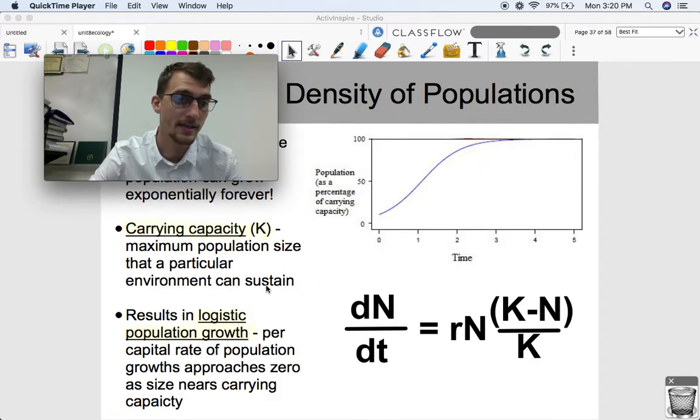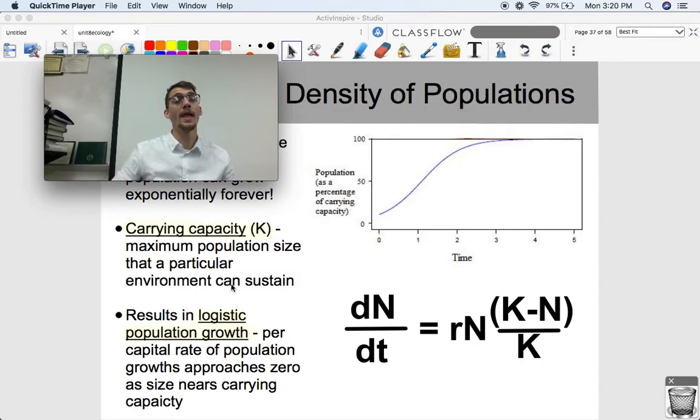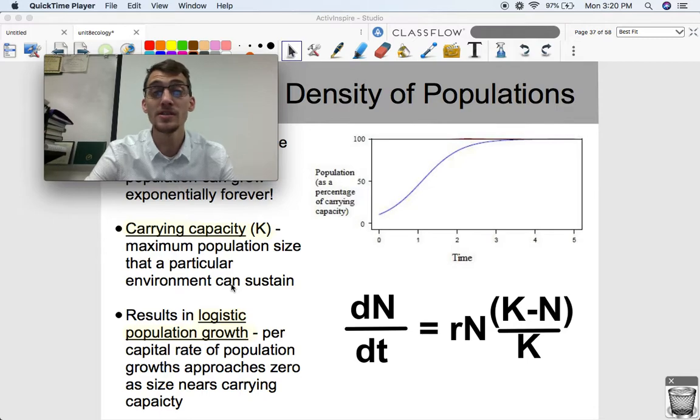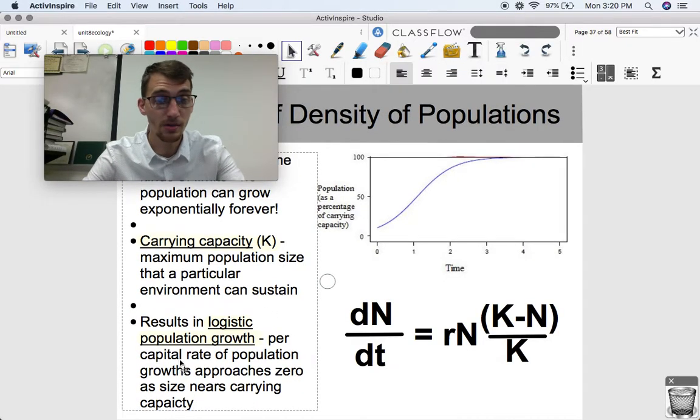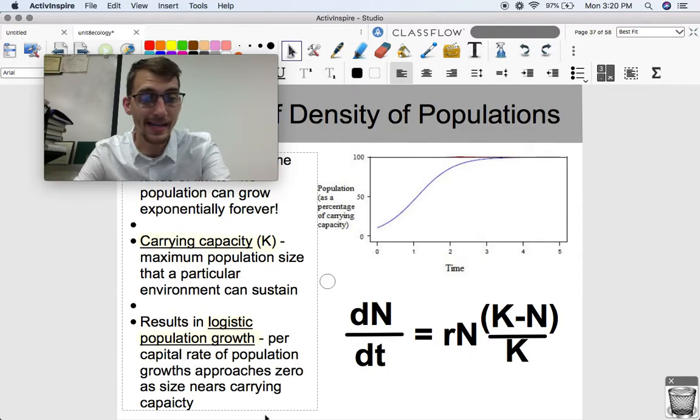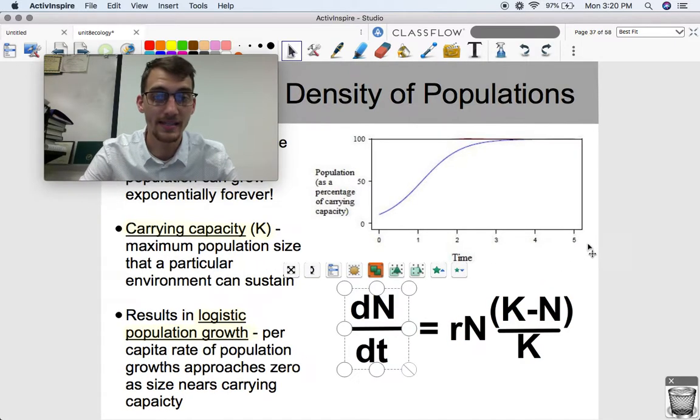When an environment does have a carrying capacity, a population does not grow exponentially. It grows in a logistic pattern, resulting in logistic population growth. And that per capita rate of population growth approaches zero as the size nears the carrying capacity.